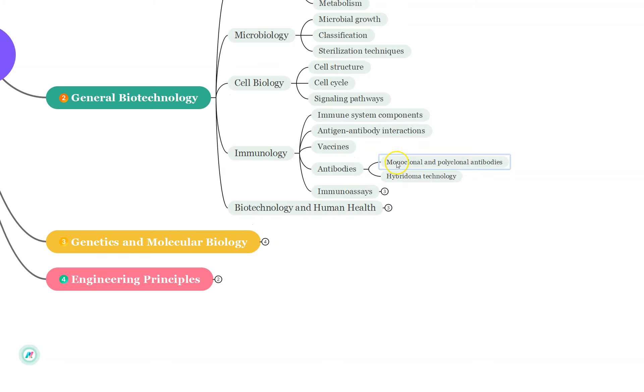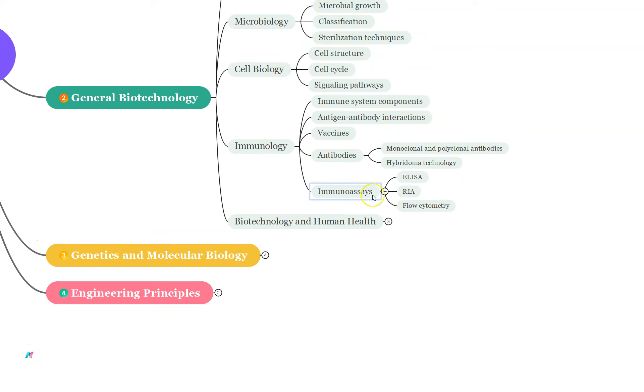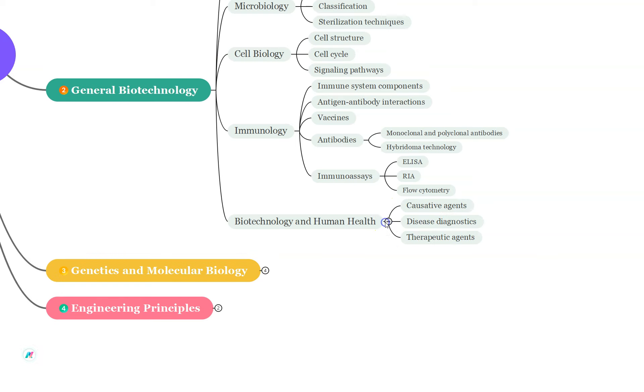Under Antibodies, study the Monoclonal and Polyclonal Antibodies, also have an idea of the Hybridoma Technology. For Immunoassays, different techniques such as ELISA, RIA and Flow Cytometry should be covered. Biotechnology and Human Health: the different Causative Agents, Disease Diagnostics and Therapeutic Agents must be studied.